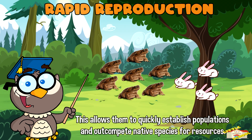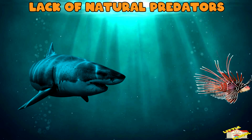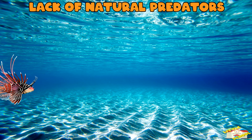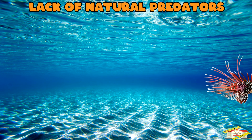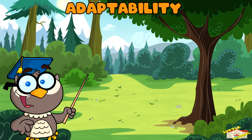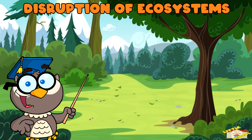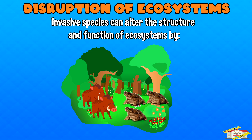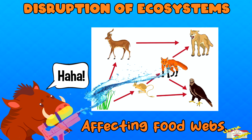Lack of natural predators: in their new environment, invasive species may not face the same predators, disease, or other controls that keep their population in check in their native habitat. Adaptability: invasive species can adapt well to a variety of environmental conditions, allowing them to thrive in diverse ecosystems. Disruption of ecosystems: invasive species can alter the structure and function of ecosystems by outcompeting native species for resources and affecting food webs.